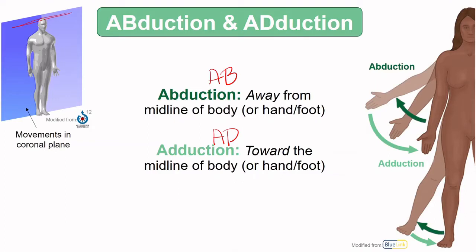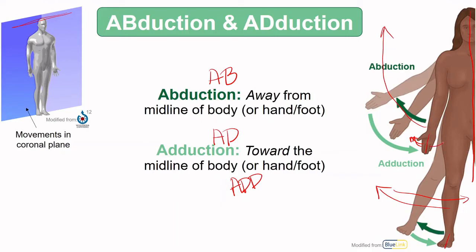For abduction, think of your arm being abducted away from the body — as it moves up and over, it eventually goes above your head. This is most obvious at the shoulder but also happens at the wrist. Adduction brings it back toward the body to anatomical position. In the hand and foot, rather than using the body's midline, we use the midline of the hand or foot for defining away and toward.